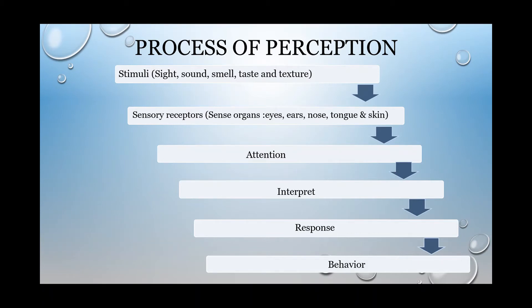Perception has six steps in this process. The first one is stimuli. Stimuli refers to what kind of force, object, or reinforcement will trigger your response. Stimuli are those objects, situations, or people which force you to react or respond.